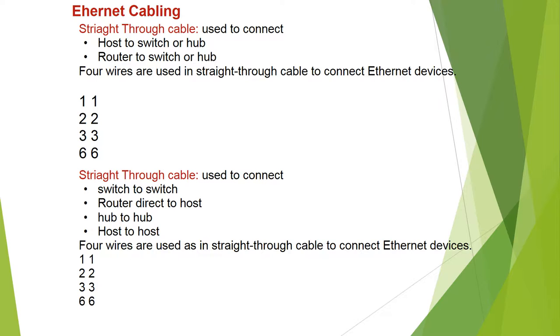Four wires are used in straight-through cable to connect Ethernet devices, paired as 1-1, 2-2, 3-3, 6-6.